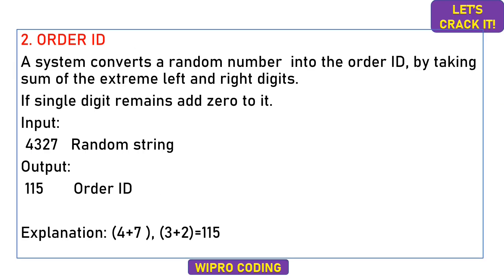Now we move to the second coding question asked in the latest Wipro slot. This question is about generating an Order ID from a random string. The system converts a random number into an Order ID by taking the sum of the extreme left and right digits. For example, with input 4327, extreme left is 4 and extreme right is 7, so 4 plus 7 equals 11. Then extreme left is 3 and right is 2, giving 5. The output is 115.